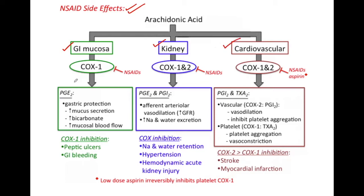COX-1 is responsible for the release of prostaglandin E2 (PGE2) and PGI2, which cause gastric protection by increasing mucosal secretion, increasing the bicarbonate content, and by increasing the mucosal blood flow.